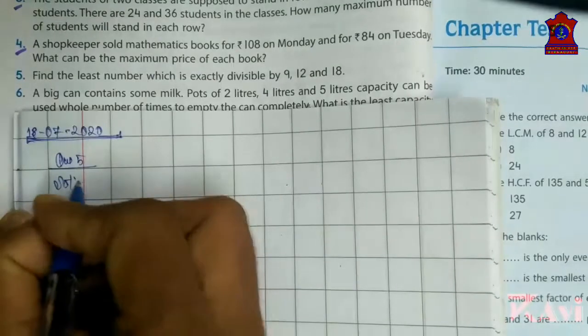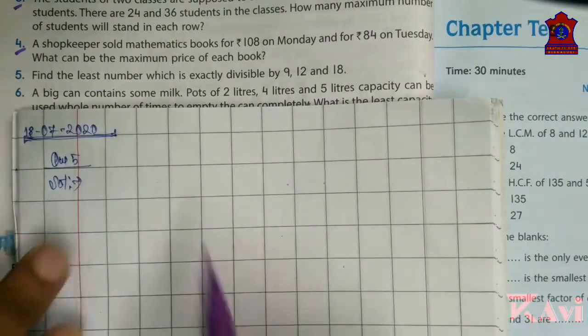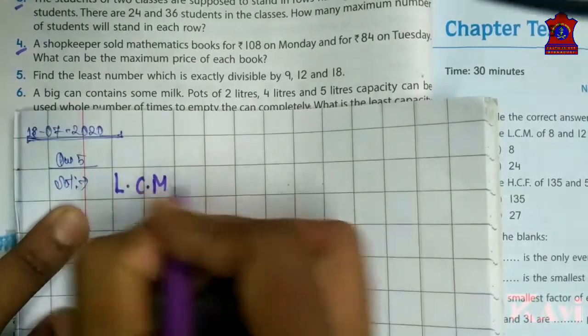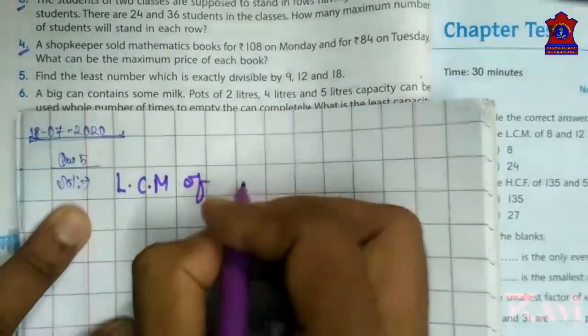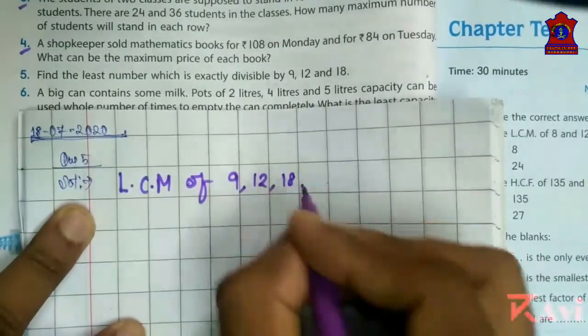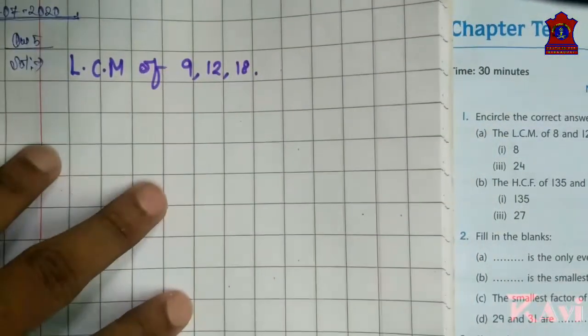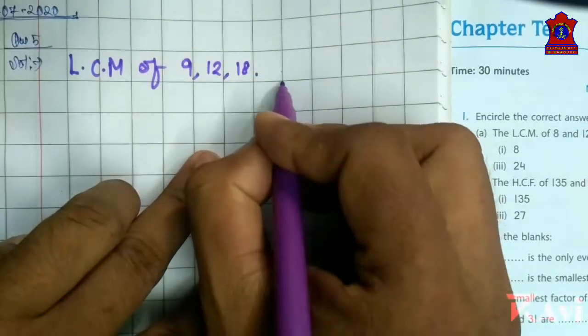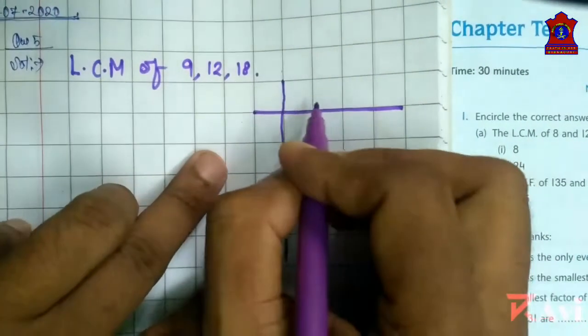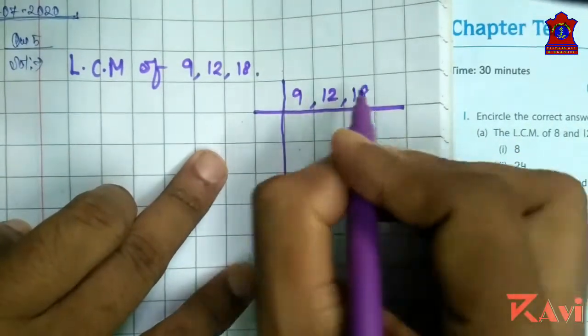Solution. Write LCM of 9, 12 and 18. Create LCM box. 9, 12, 18.